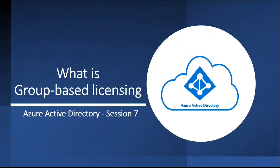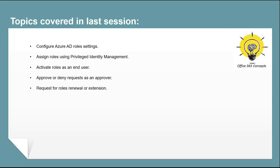Hi guys, I hope you all are doing well and welcome to the next video of this entire series of Azure Active Directory. In the last video, we discussed how to configure and set up privileged identity management. We discussed how to assign roles, how to activate role assignments, how to add an approver. We discussed how approver approves or rejects the role assignment request and how to extend or renew the role assignments post expiration.